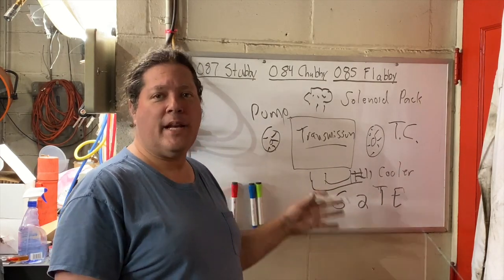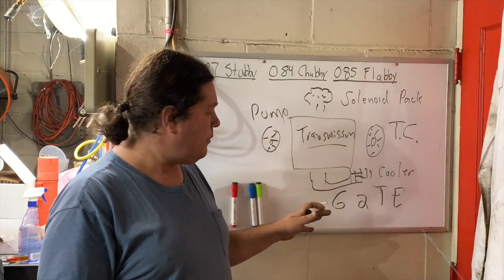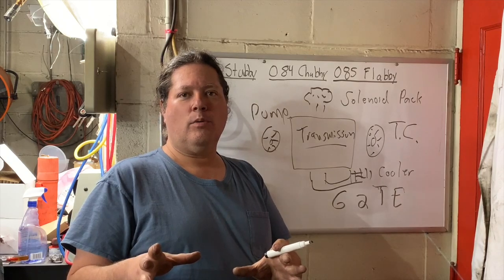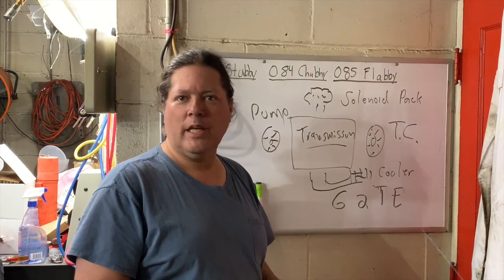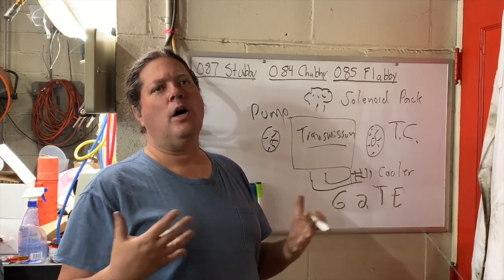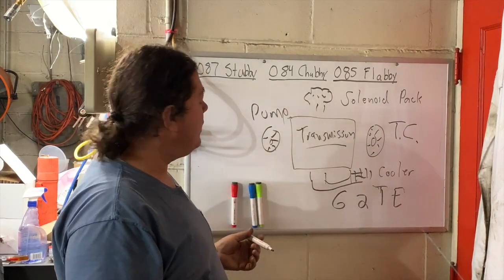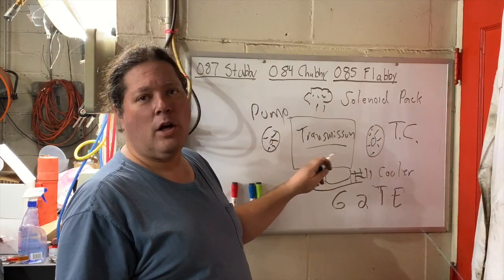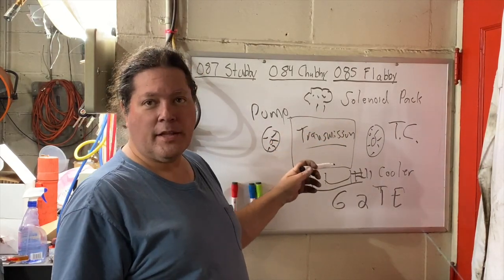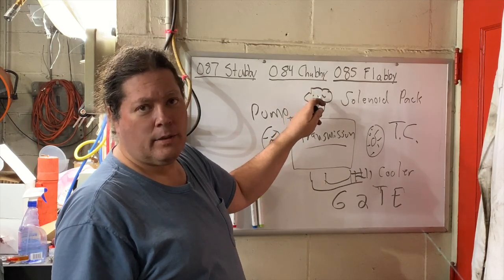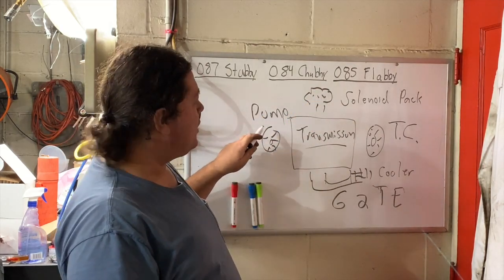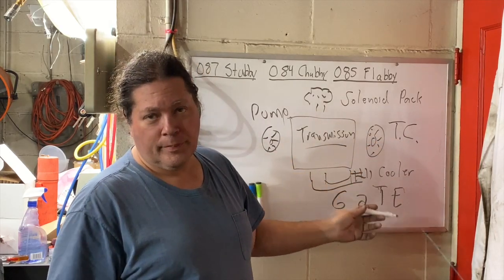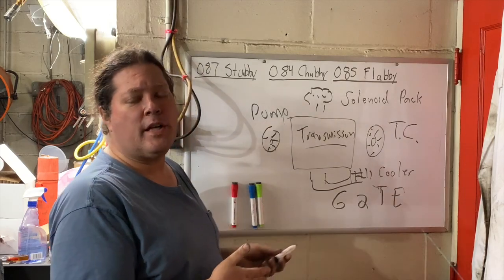These are your major sub-assemblies. In multiple parts of this video we're going to talk about each one individually. To review: you've got your black box transmission (all the mechanical stuff), the thing that controls it (the brain, the solenoid pack), the pump which makes the pressure that all this runs on, the torque converter which does what it does, and the cooler. I suppose it should be said that there's one more small part in here, which is the fluid and filter.